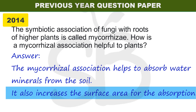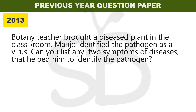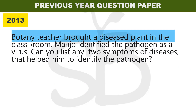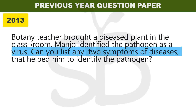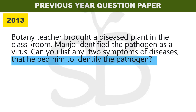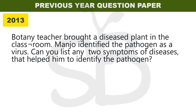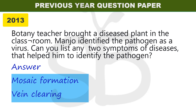In 2013, a botany teacher brought a diseased plant into the classroom. Manoj identified the pathogen as a virus. List any two symptoms of the disease that helped him identify the pathogen. Symptoms of viral infection in plants include: mosaic formation, leaf rolling and curling, yellowing and vein clearing, and dwarfing and stunted growth.